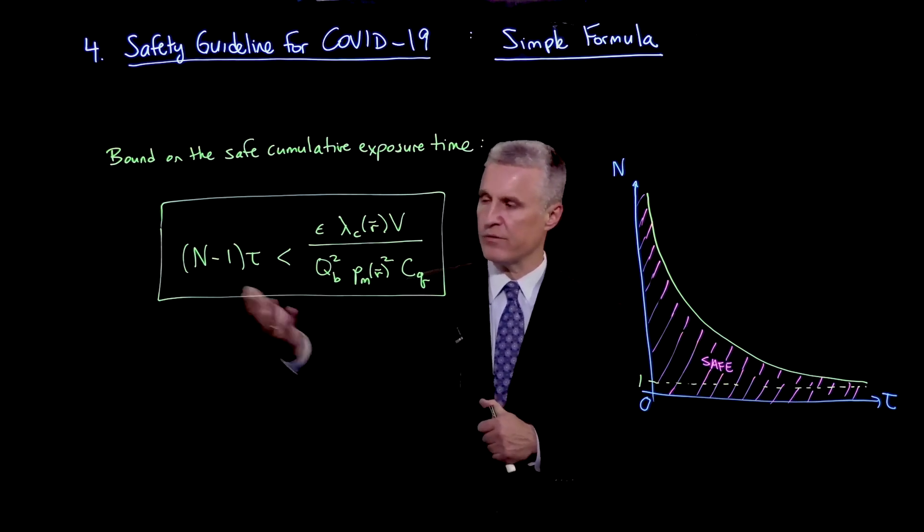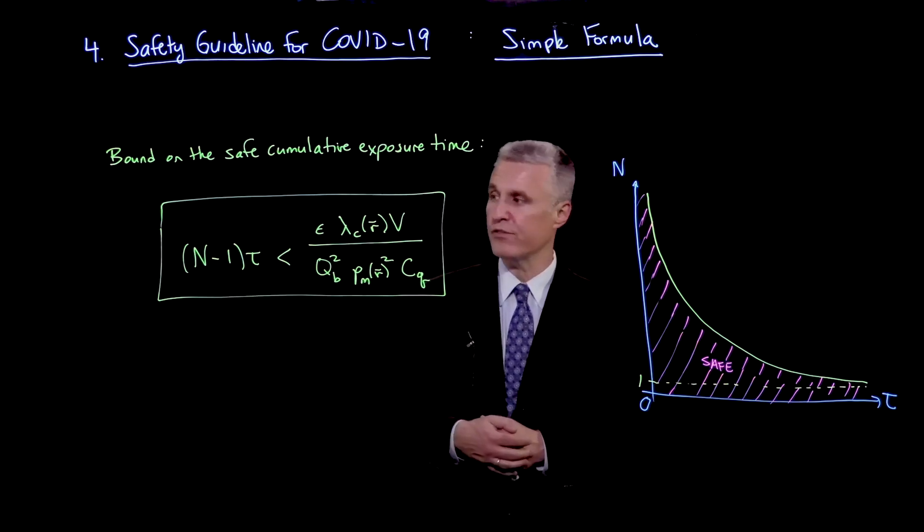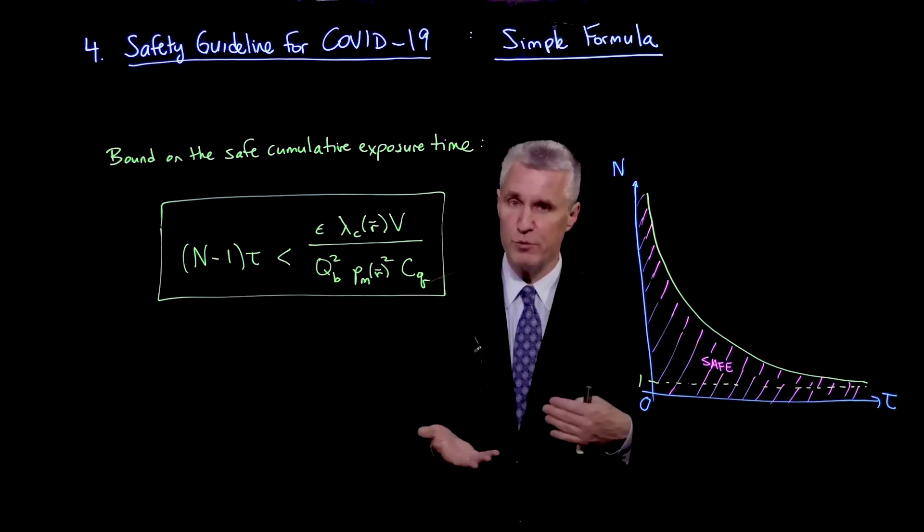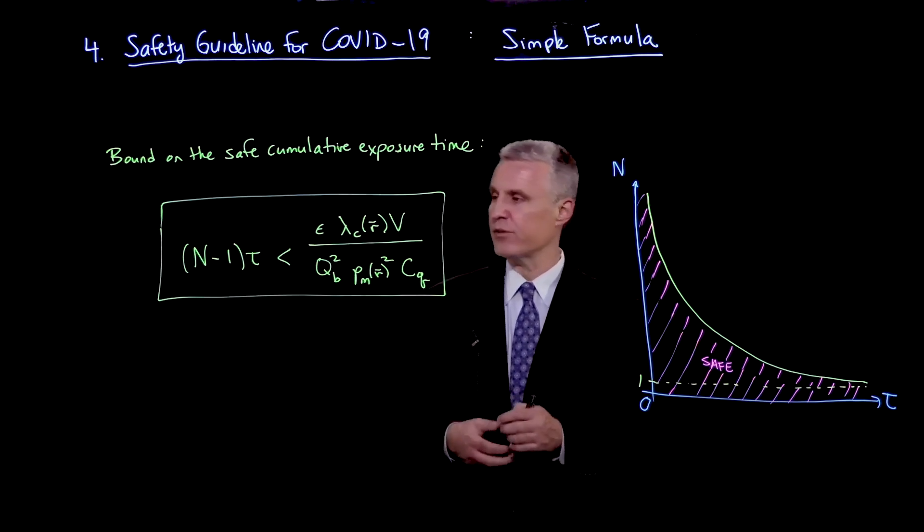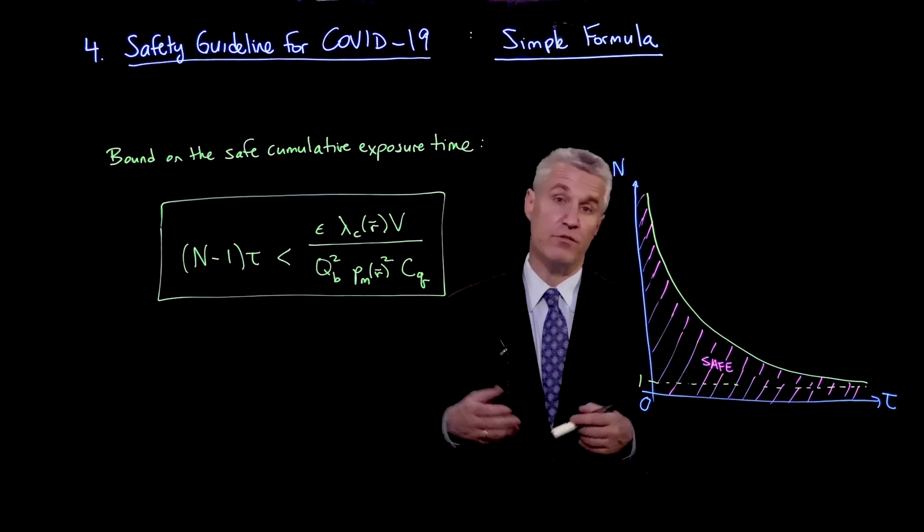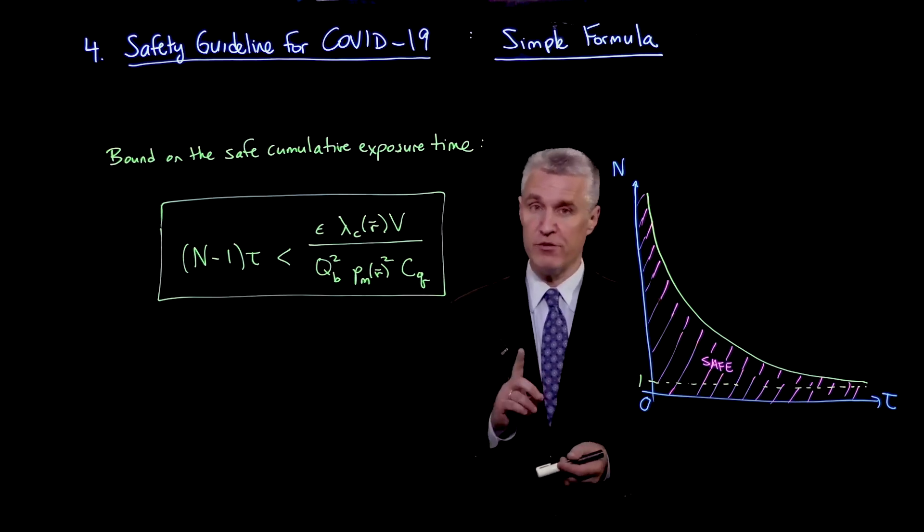It basically bounds the cumulative exposure time, which is n minus 1, the number of susceptible people when one person enters a room of occupancy n. That's the maximum occupancy, and stays for a time tau.